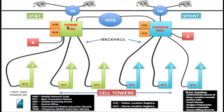The MSC receives the IMSI code for the very first time and checks with the business office to authenticate that information, making sure you are a legitimate customer on the network. Once authenticated, the IMSI code is stored in the HLR registry — the Home Location Registry — where it stays as long as you are a customer. At the same time, your location information is also sent to the MSC, which stores it, indicating you are located in the vicinity of base station number one.